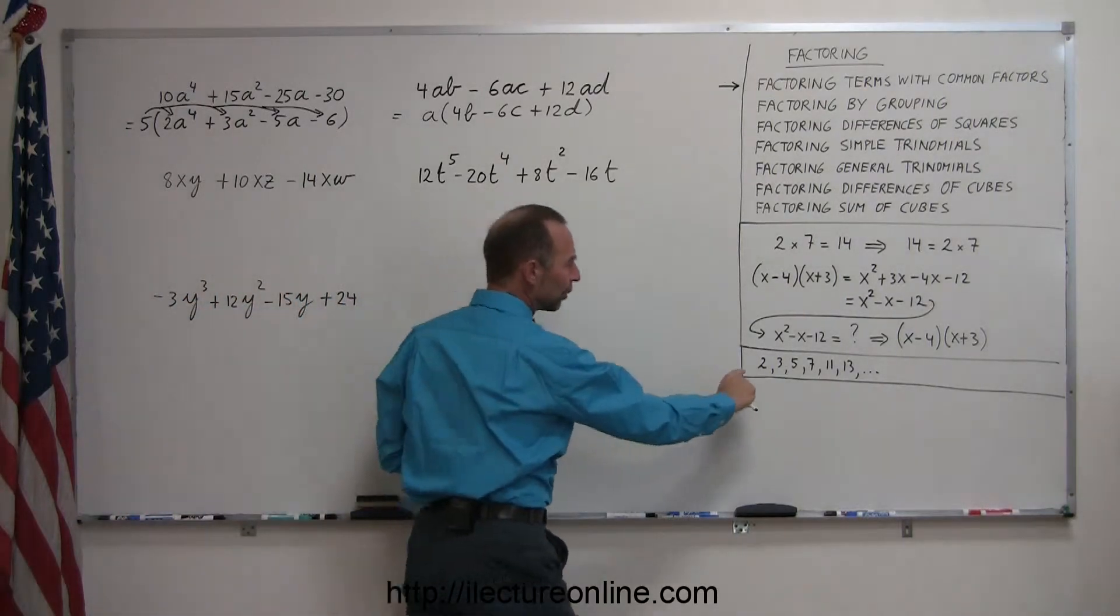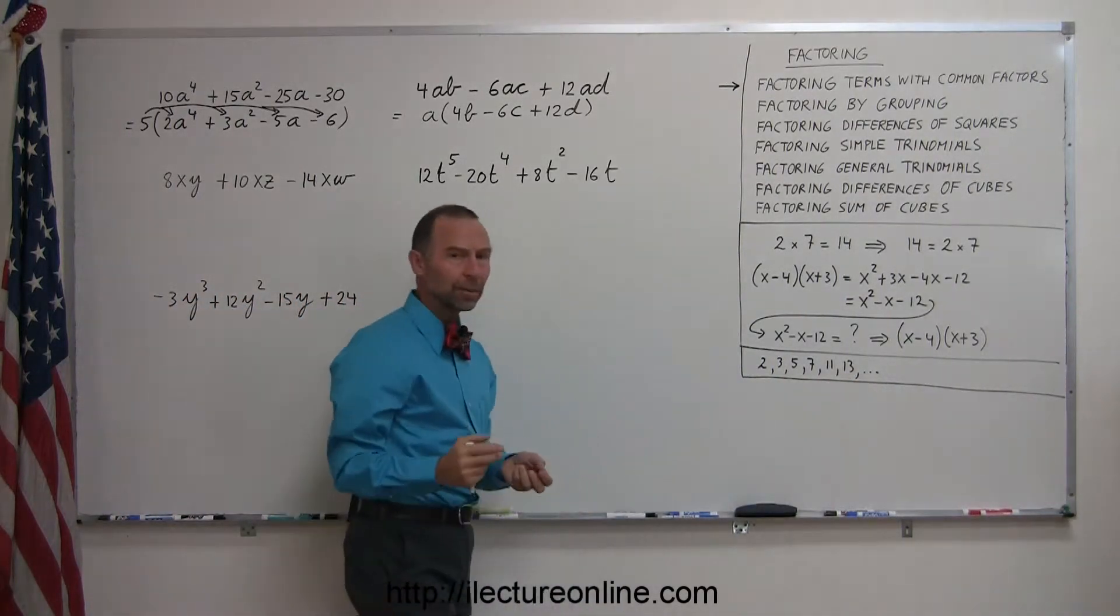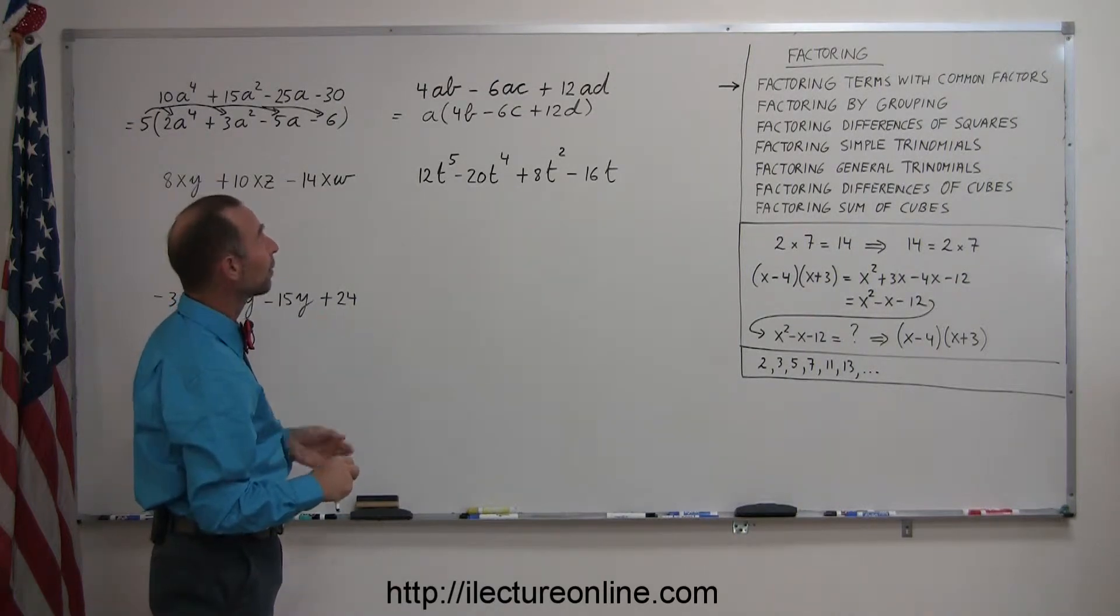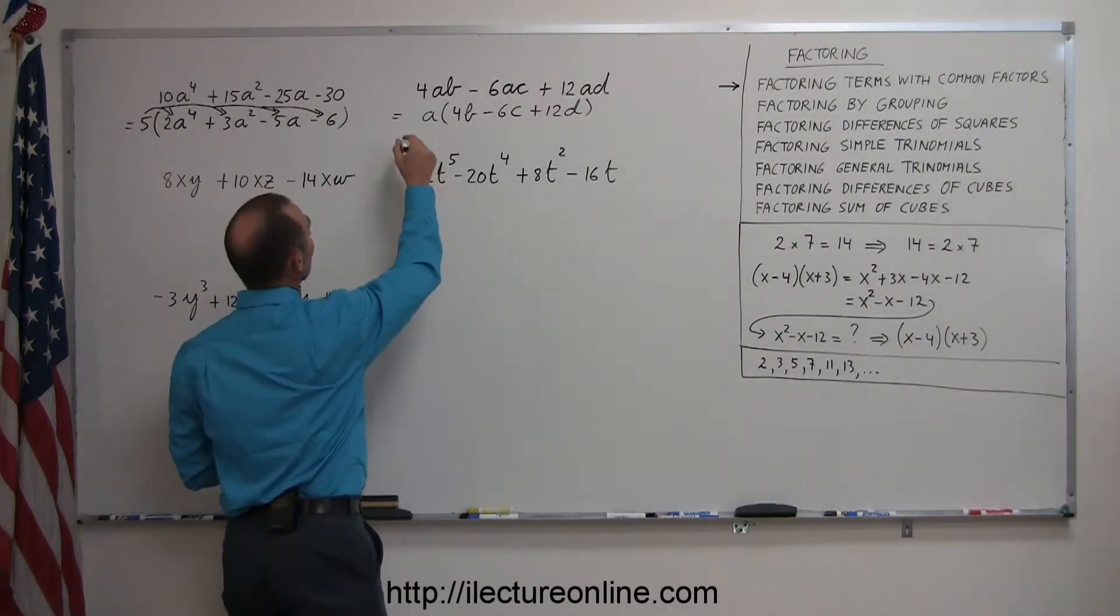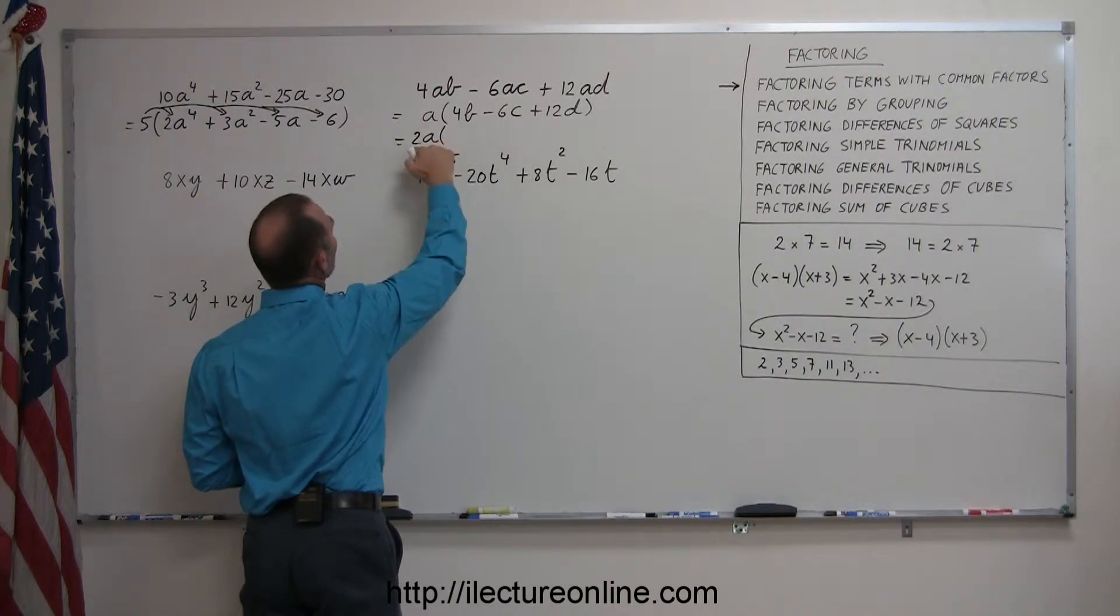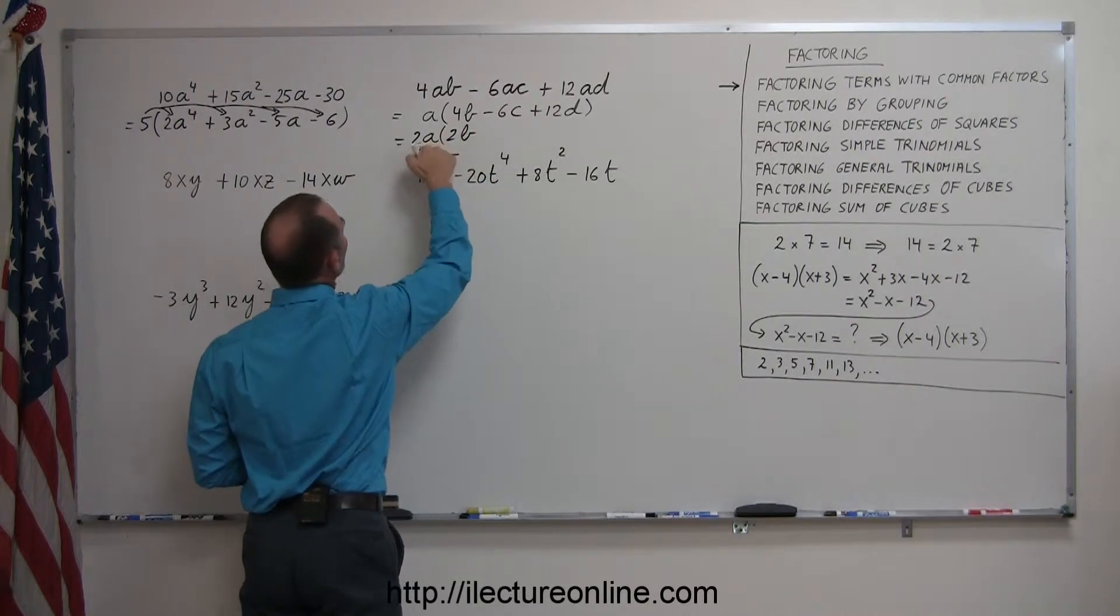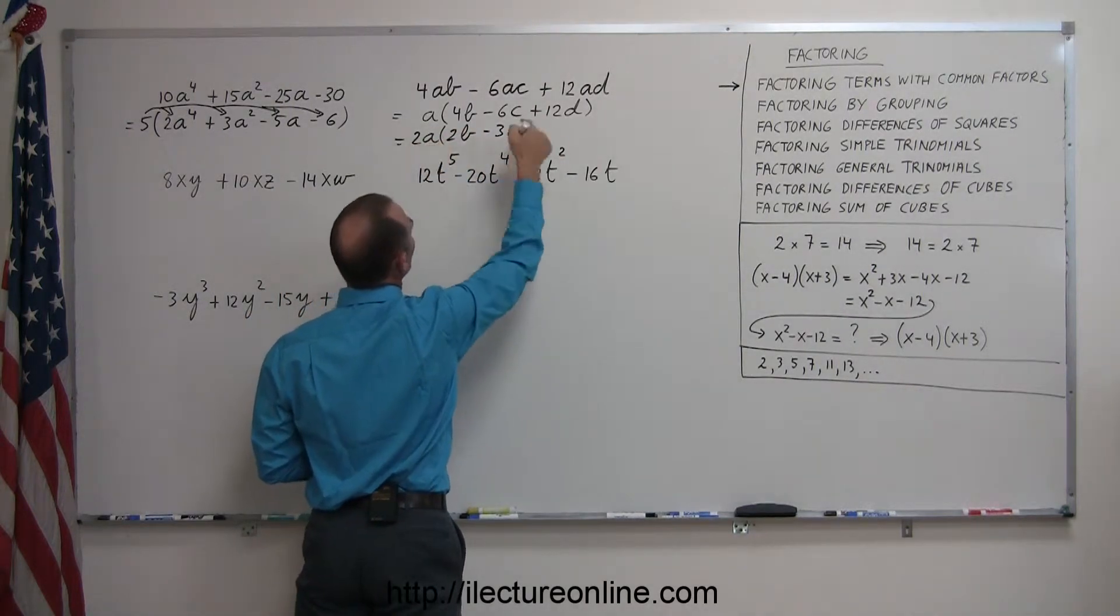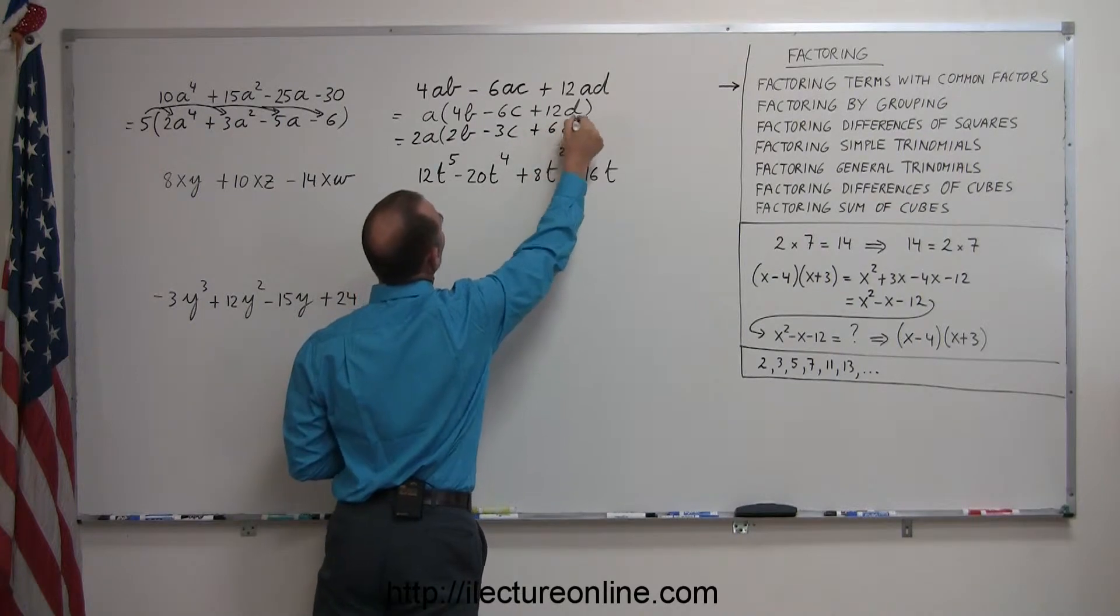What I did here is I wrote down all the prime numbers. You probably want to go look and see if any of the factors are prime numbers in there. In this case, the number 2. So I can now write this equal to 2a times, 4 divided by 2 is 2, so I'll write 2b. 6 divided by 2 is 3, so I'll write minus 3c. And 12 divided by 2 is 6, so I'll write plus 6d.